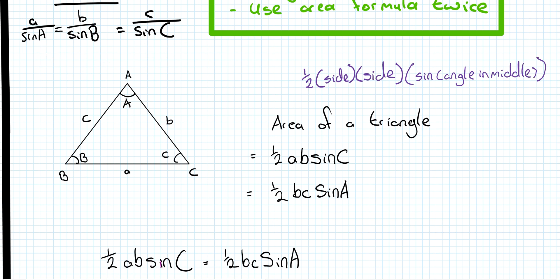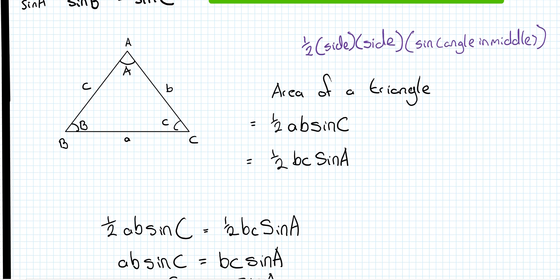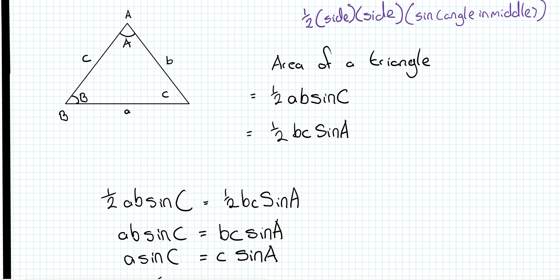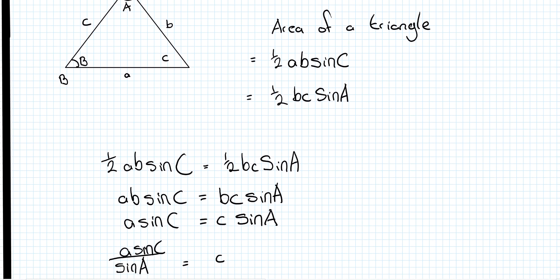So the first thing we do is multiply both sides by 2 which would get rid of the halves. Then we divide both sides by B. And now I remember that I want the side A to be on top, so the only way to get to that would be to divide by sine of A. And then I want the side C to be on top, and the only way to get to that would be to divide by the sine of C.